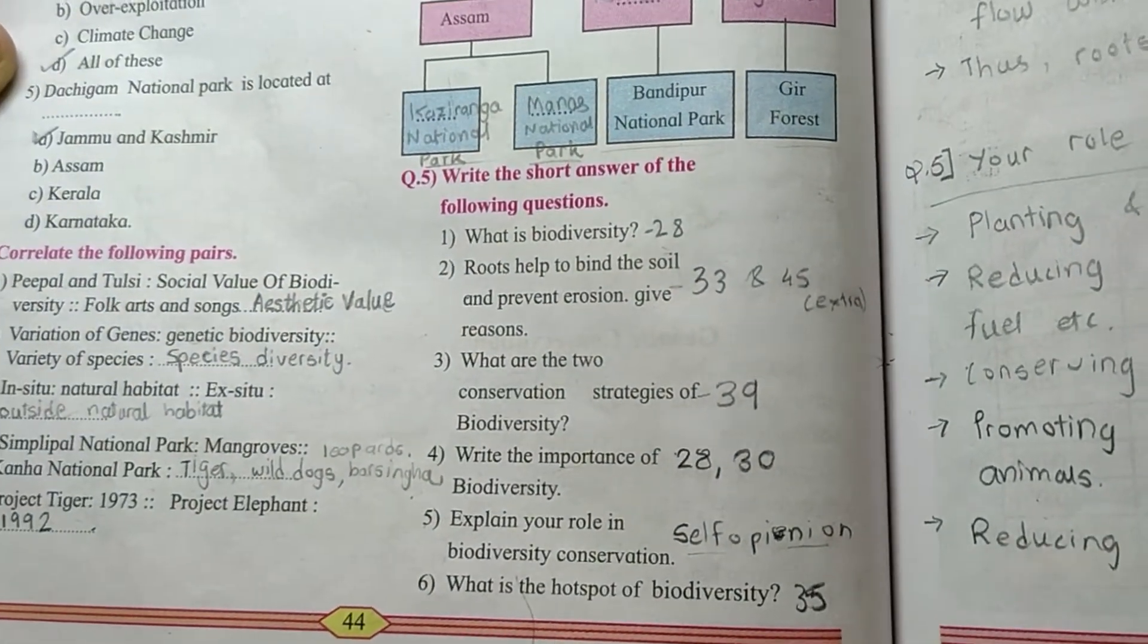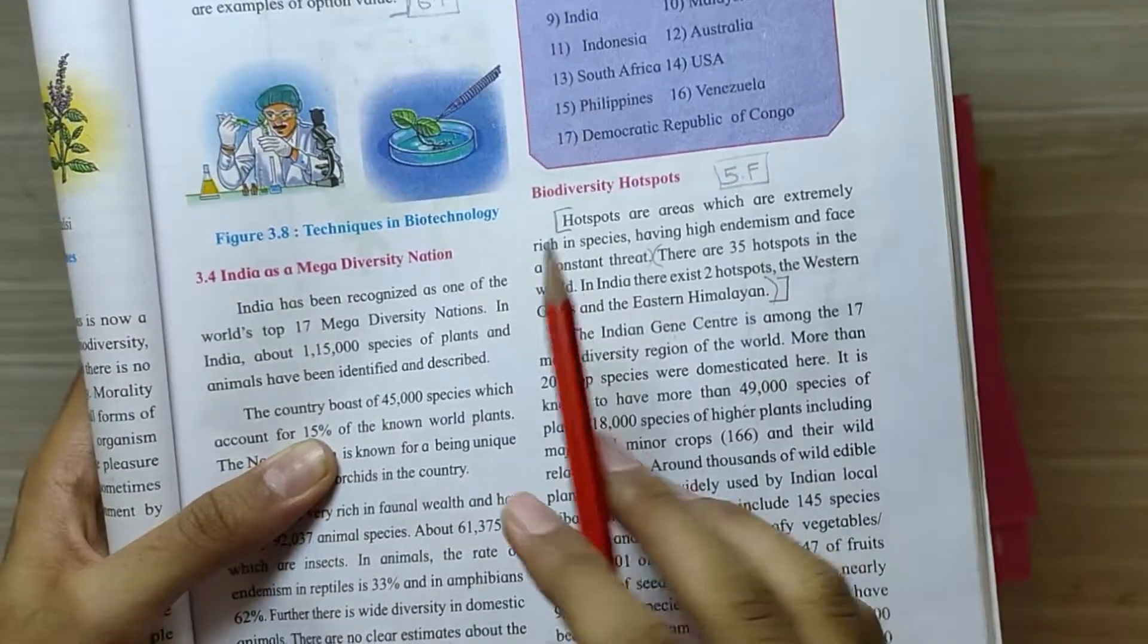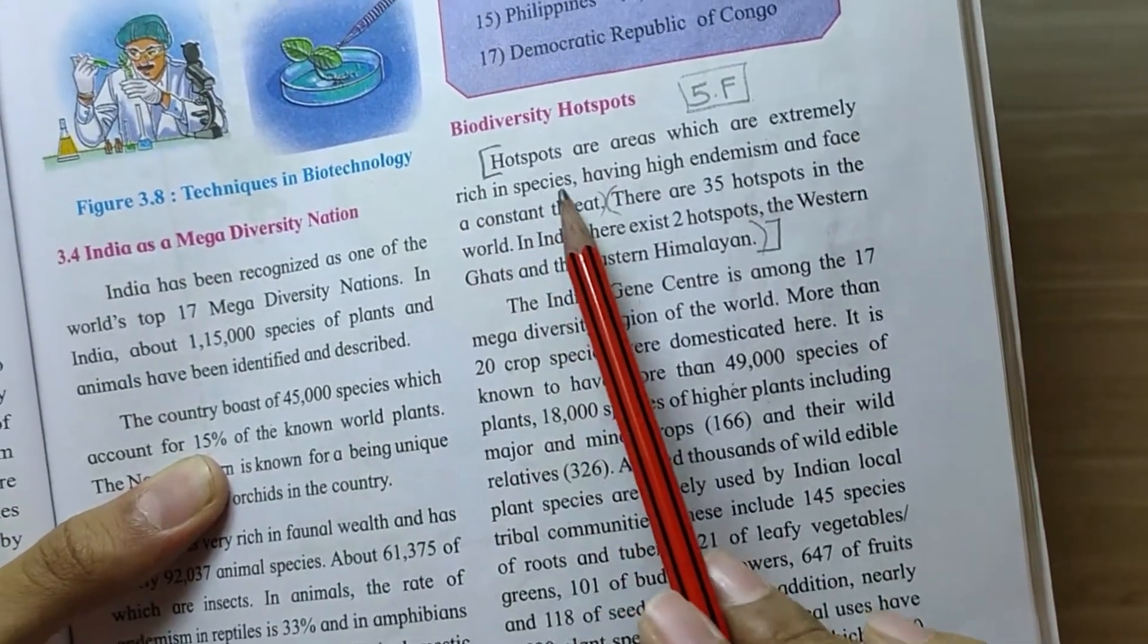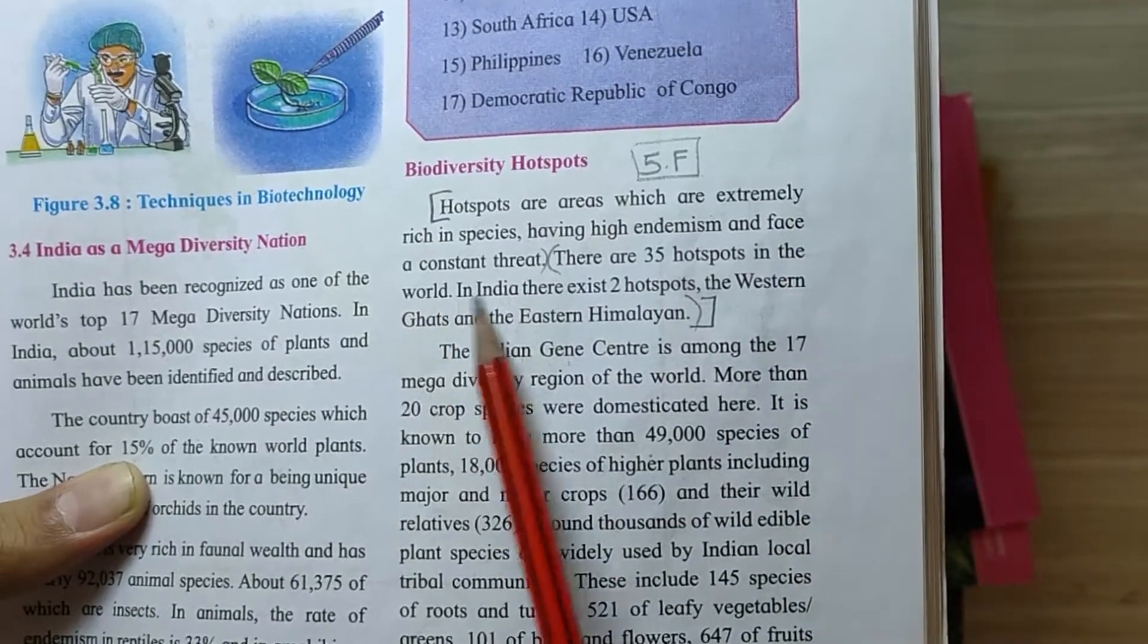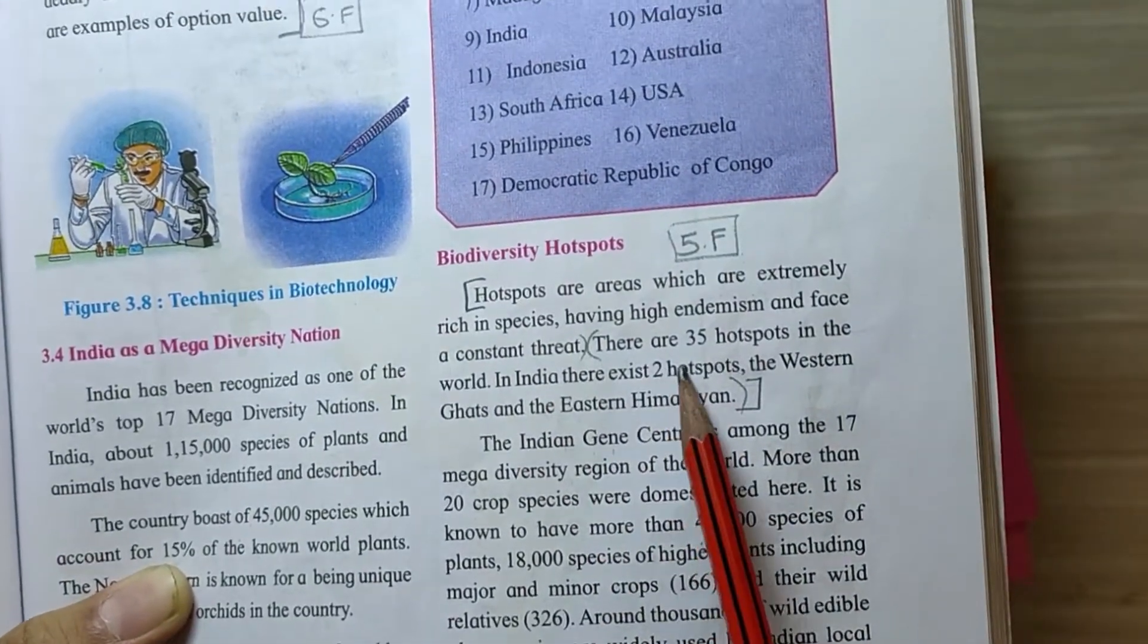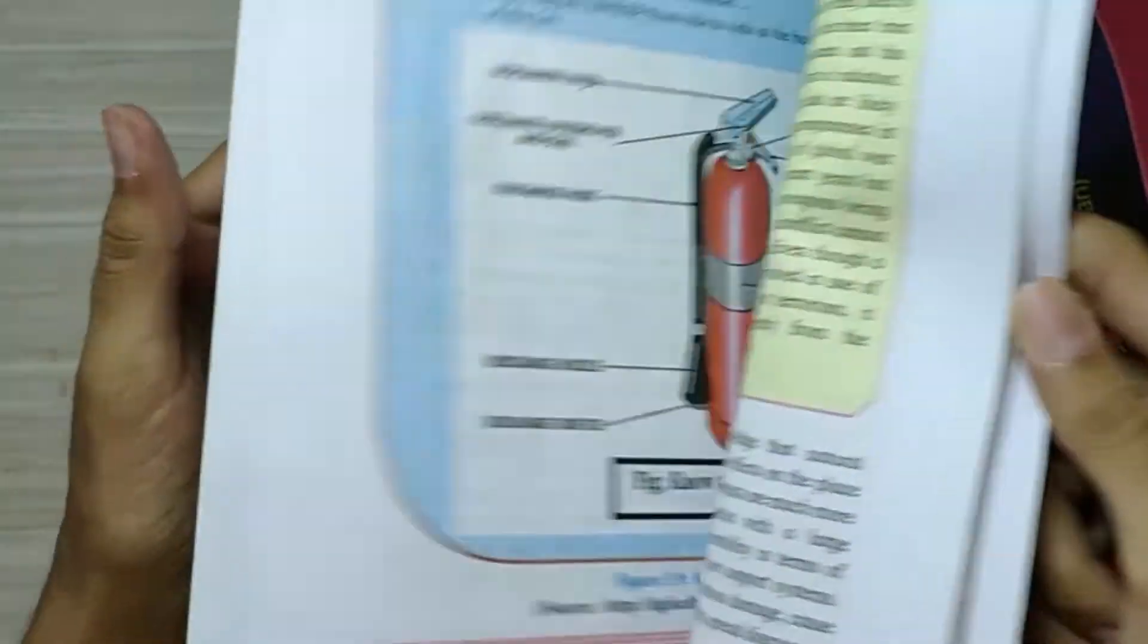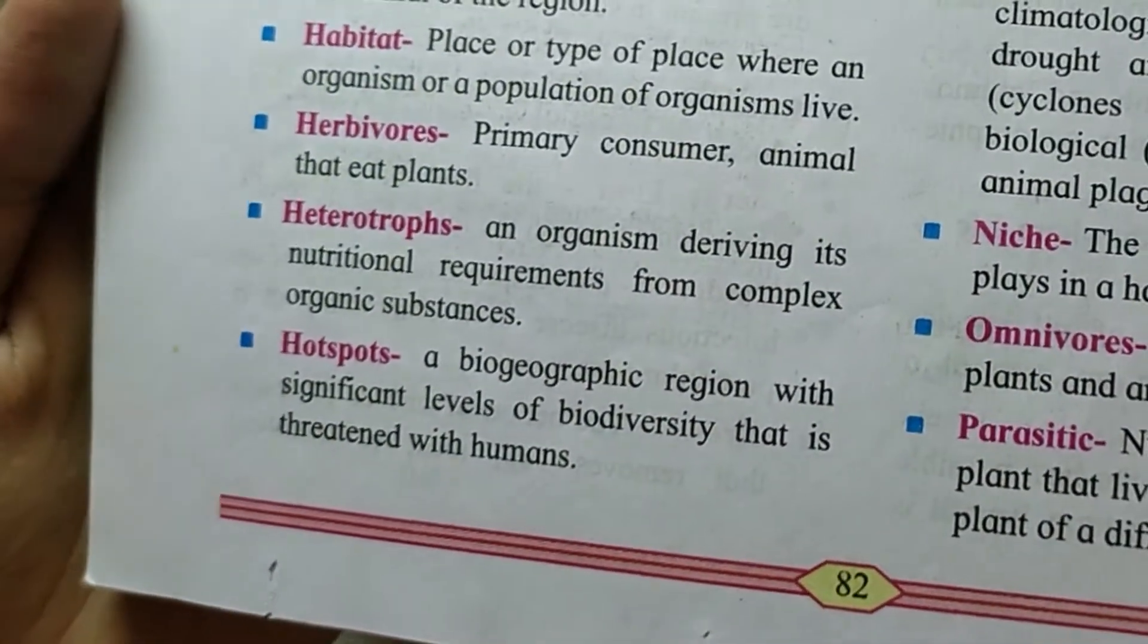Question number 6, what is hot spot of biodiversity. It is on page number 35, it is a very small answer. The main answer is hot spots are areas which are extremely rich in species, having high endemism, and face a constant threat. You can write this much answer, there is also something given behind the textbook, you can write it as point also. It is given on page number 82 as a definition.